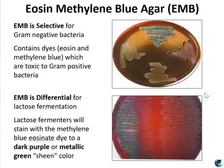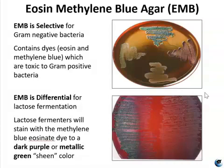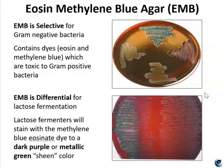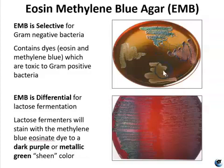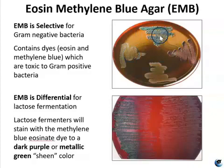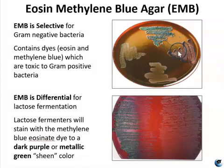EMB — eosin methylene blue agar — is selective for gram-negative bacteria. It contains eosin and methylene blue dyes, which are toxic to gram-positive bacteria. EMB is also differential for lactose fermentation. Lactose fermenters will stain with the methylene blue eosinate dye to a dark purple or metallic green color. This figure shows EMB inoculated with two coliforms, a gram-negative non-coliform, and a gram-positive organism. Note the metallic green color and the dark purple color — these two are fermenters of lactose.